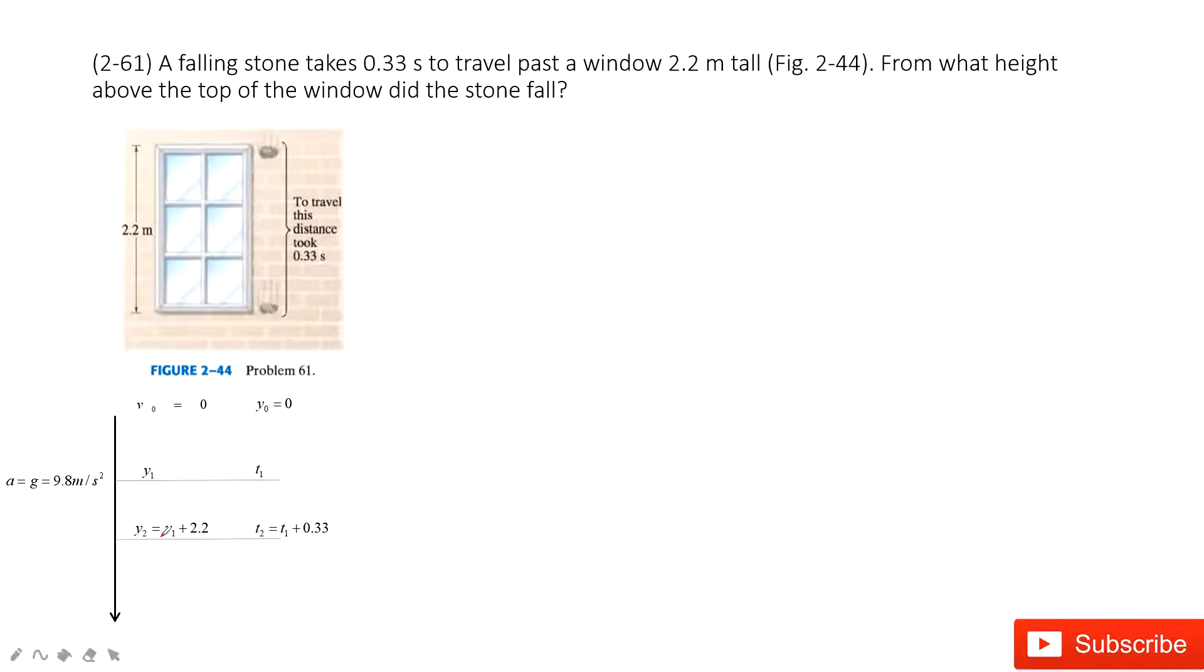And we know y2 equals y1 plus 2.2. T2 equals t1 plus 0.33. When we solve the problem, we can see the known quantities and unknown quantities.